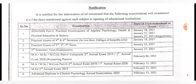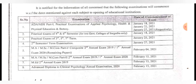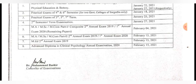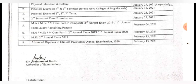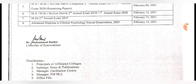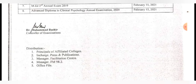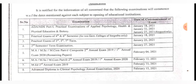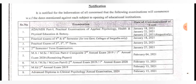MA, MSc, MCom Part 1 composite second annual examination 2021, first annual examination 2021, and remaining papers from 2019 and 2020 are scheduled for February 4, 2021. MA, MSc, MCom Part 2 second annual exam 2019 and first annual exam 2020 are on February 15, 2021. The Advanced Diploma in Clinical Psychology annual examination 2020 is also on February 15, 2021, as signed by the Controller of Examinations.